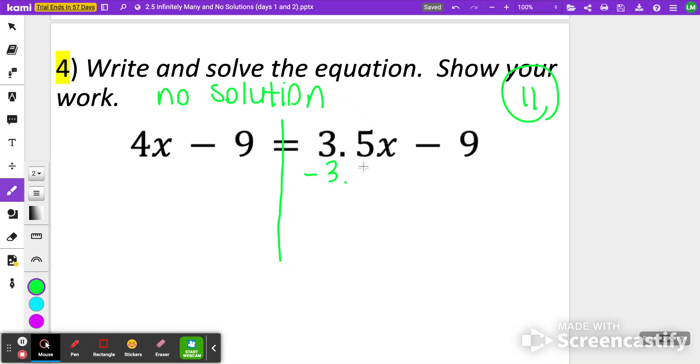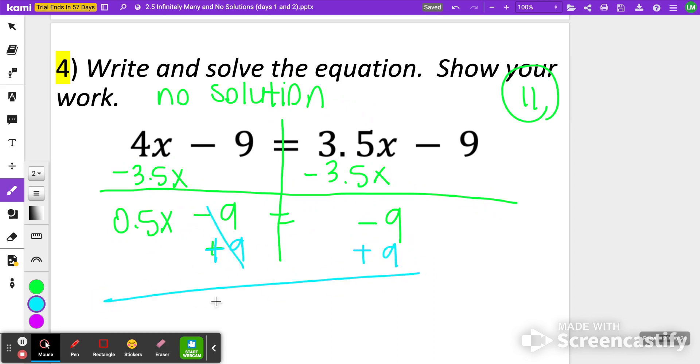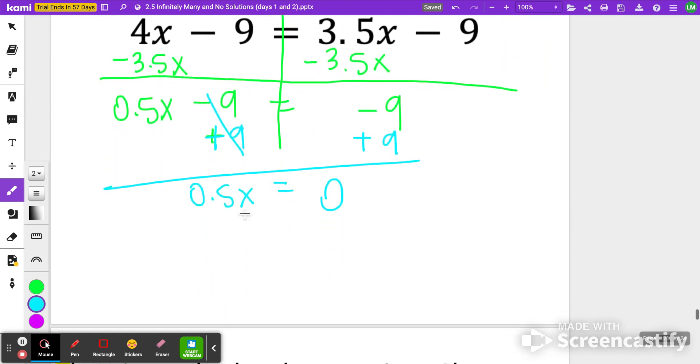I'm going to subtract 3.5 X and put it on the left side. So 4 minus 3.5 is 0.5 X. And then minus 9 equals minus 9. Then I'm going to add 9 to both sides. These cancel out, but if you notice on the right side, they also cancel out, which is equal to 0. 0.5 equaling 0 still can be divided by 0.5. So 0 divided by 0.5, I'm getting X is equal to 0. So that one actually is one solution. So my prediction was wrong.